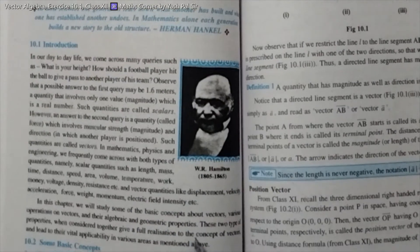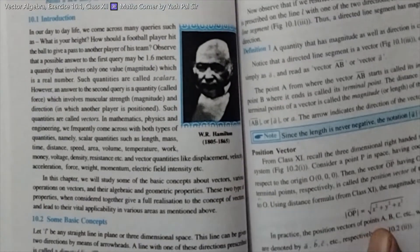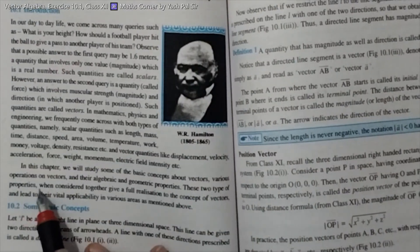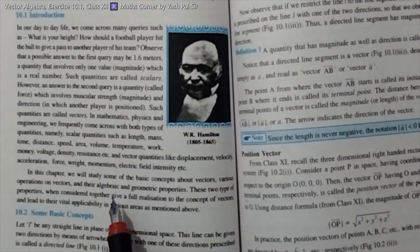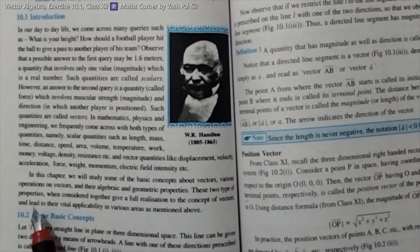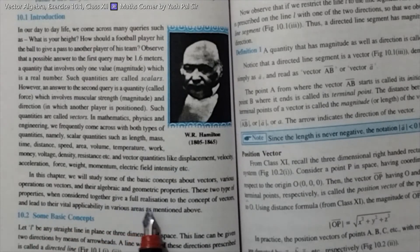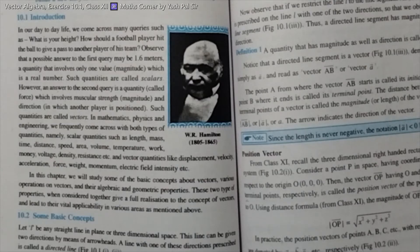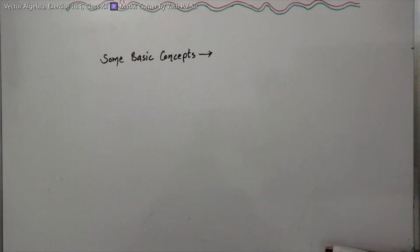In this chapter, we will study some basic concepts about vectors, various operations on vectors, and their algebraic and geometric properties. These two types of properties, when considered together, give a full realization of the concept of vectors and lead to their vital applicability in various areas.